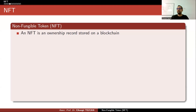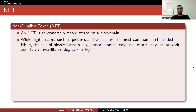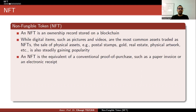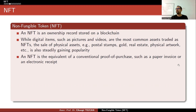While digital items such as pictures and videos are the most common assets traded as NFTs, the sale of physical assets — for example, postal stamps, gold, real estate, and physical artwork — is also steadily gaining popularity. An NFT is the equivalent of a conventional proof of purchase, such as a paper invoice or an electronic receipt. The NFT — the thing you write to the blockchain — is actually just a paper invoice equivalent.